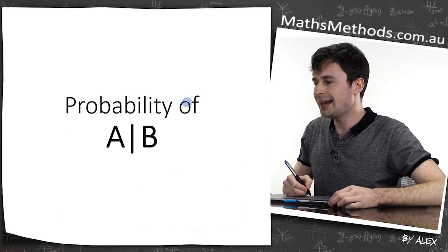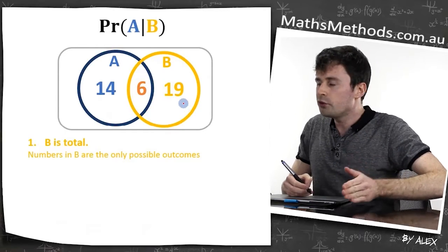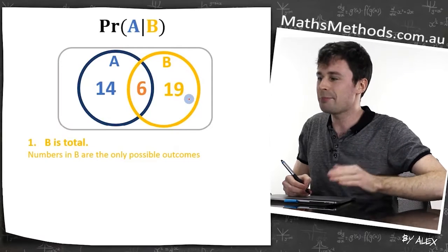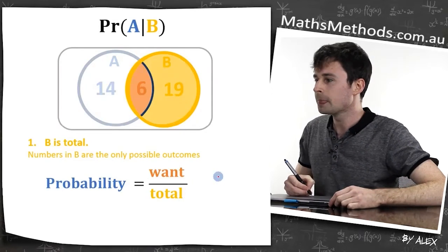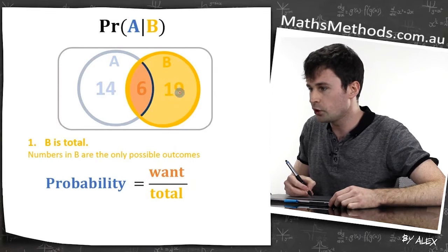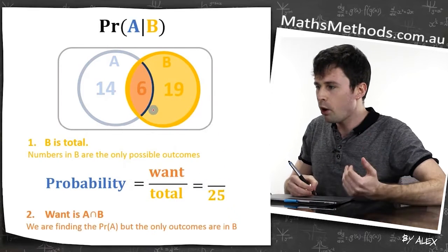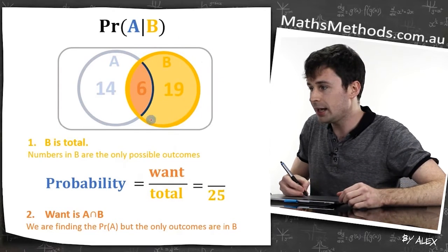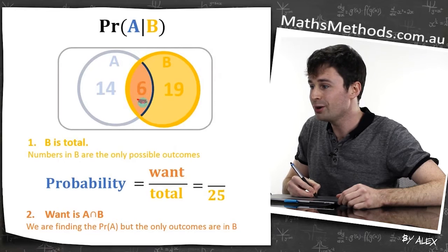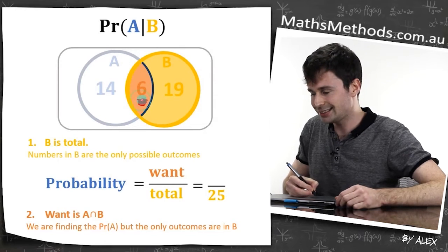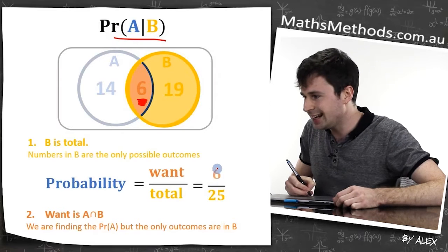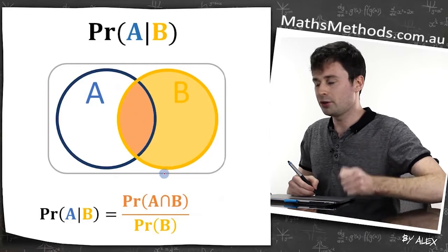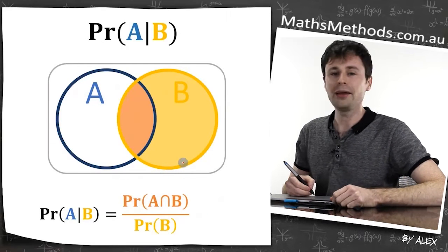The probability of A given B — B is the total because it's given that B has happened. We're assuming B has definitely 100% happened, so the only things that exist are the things in B. The total we're considering is 19 plus 6, which is 25. What we want is A intersection B, because the only A's available are in the intersection, which is 6. So the probability of A given B is 6 over 25. More generally, the probability of A given B equals the probability of A intersection B divided by the probability of B.